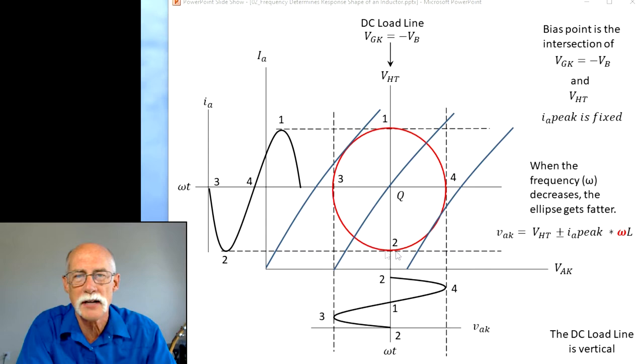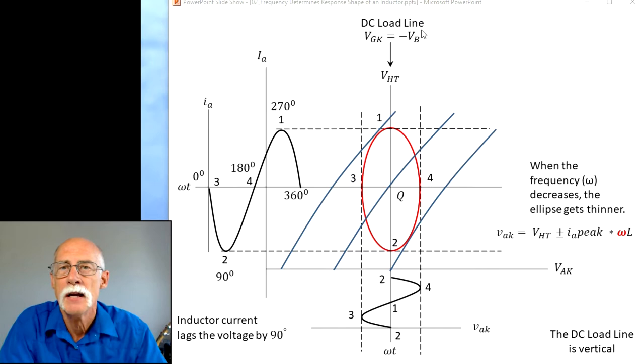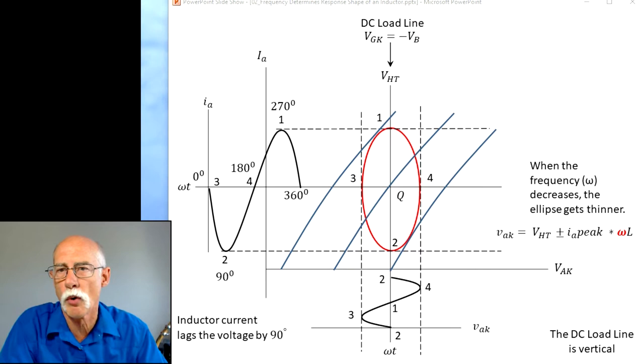DC load line—here's the current at zero degrees, 90, 180, 270, 360. It is flowing around the ellipse. Here's your Q point, the axle of the wheel, if you will. The inductor current lagging by 90 degrees—this is an illustration of that. When the current is zero, the voltage is peaked. When the voltage goes to zero, the current maxes out. It's 90 degrees out of phase.